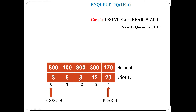The elements in the queue are in decreasing priority order. The highest priority value element is at the front end, and the least priority element is at the rear end.